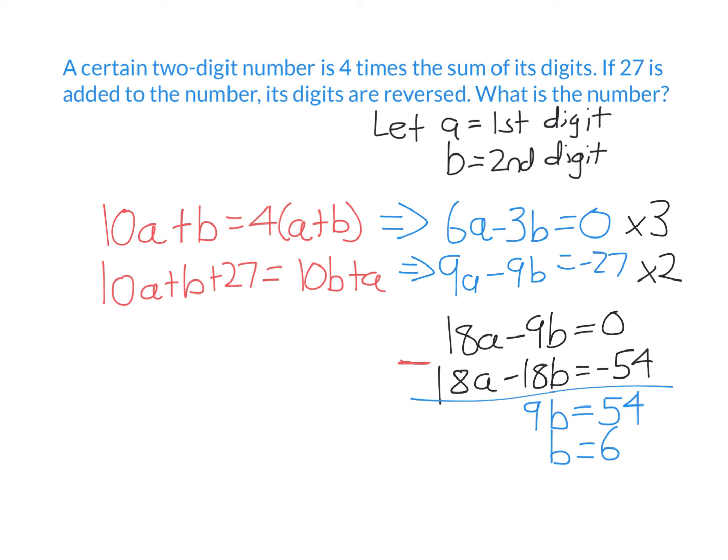Now to find what A equals, I simply substitute B equals 6 into any of these four equations. You should get A equals 3. Therefore, the number is 36, and you can check that 36 satisfies the two pieces of information in the question.